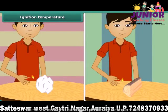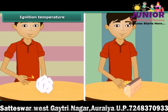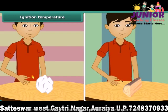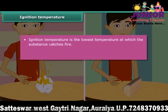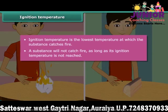A paper burns when lighted with a matchstick. Now bring the matchstick close to a piece of wood. The piece of wood does not catch fire. One lighted matchstick is not able to burn the piece of wood, but a piece of paper burned quickly. This is because the piece of wood has not reached its ignition temperature. Ignition temperature is the lowest temperature at which a substance catches fire.